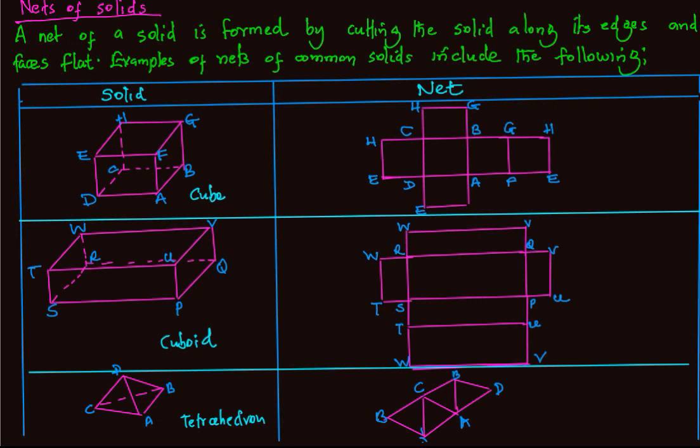For a tetrahedron, the net will be four triangles, as illustrated in that figure.